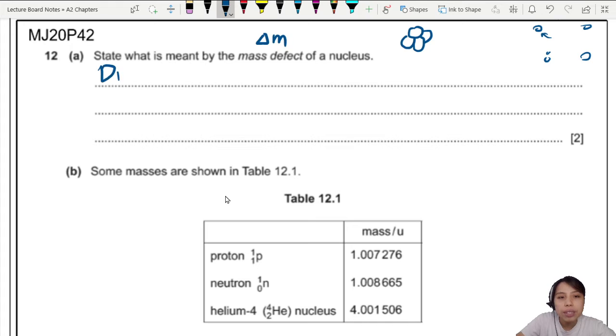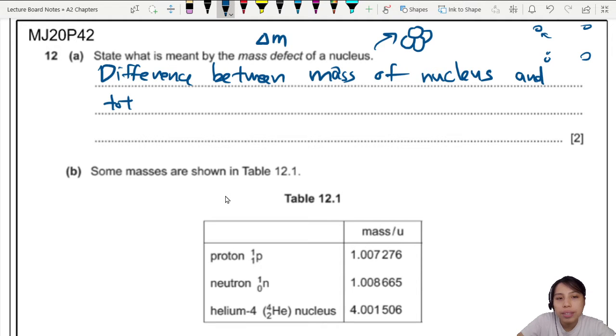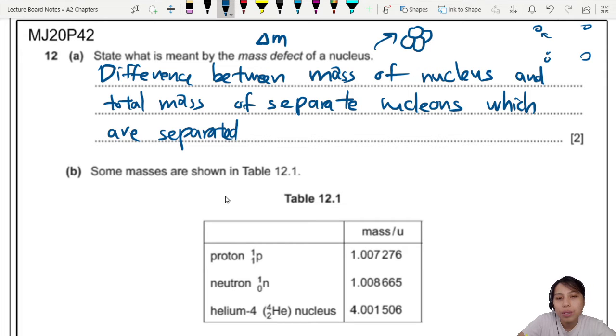So we can say that this is the difference between the mass of nucleus and the total mass of separate nucleons. So the protons and the neutrons are all separate. Separate to where? Separate one cm apart? No, no, no. Separate nucleons, total mass of separate nucleons, which are, let's add another line, which are separated to infinity. It means put very very far apart.